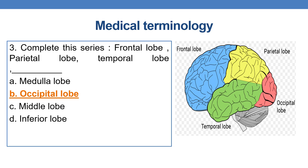The next question: complete the series — frontal lobe, parietal lobe, temporal lobe, and fill in the other lobe. The frontal lobe, parietal lobe, temporal lobe, and occipital lobe are the four lobes of the brain. So the answer is option B, occipital lobe. The complete series is frontal lobe, parietal lobe, temporal lobe, and occipital lobe.